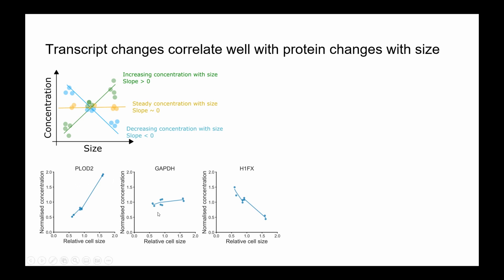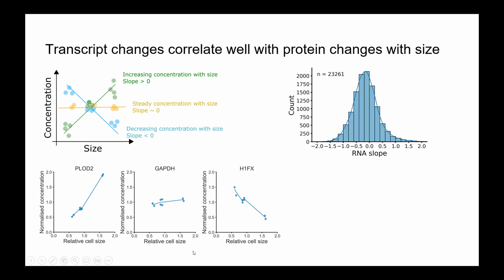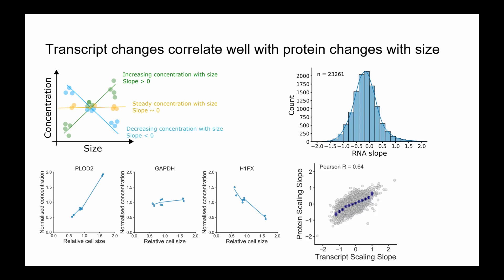Individual transcripts show examples going up, stable, or going down with cell size. To answer how much transcription contributes to changes in the proteome, we computed the correlation, and we see a fairly strong correlation with a Pearson R of 0.64.